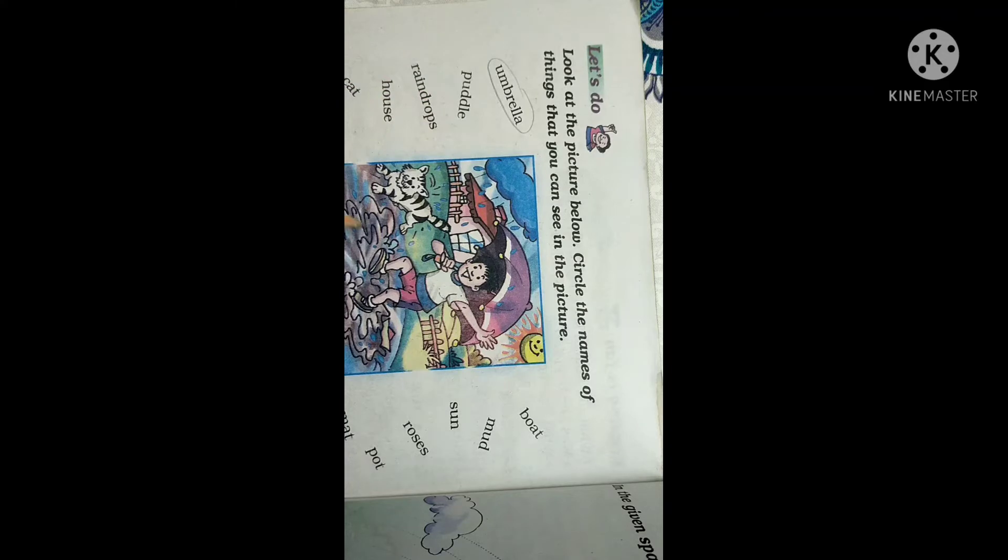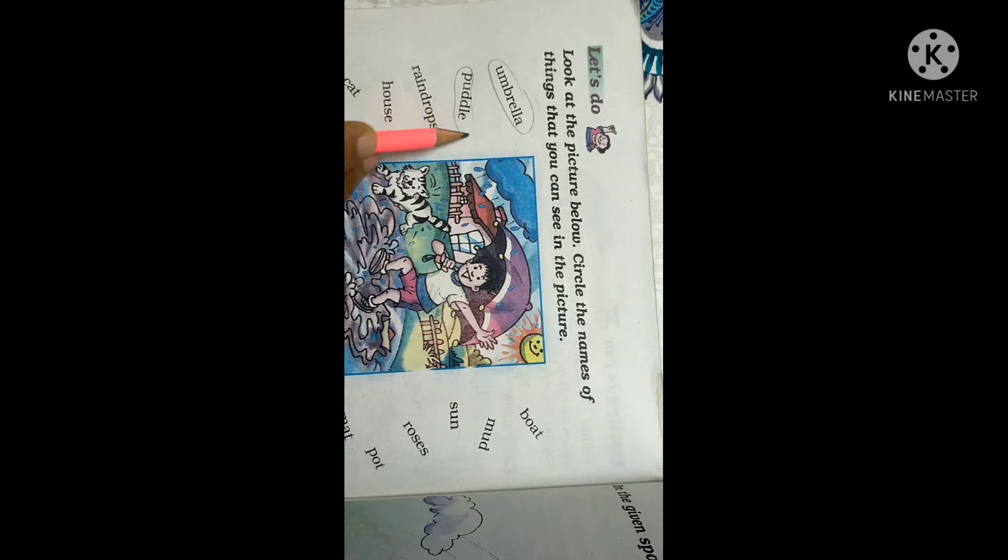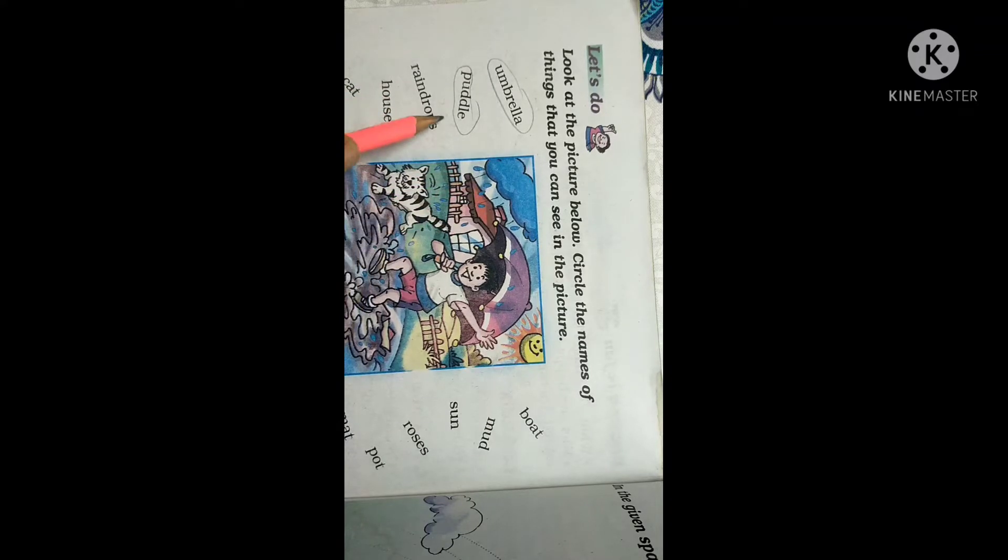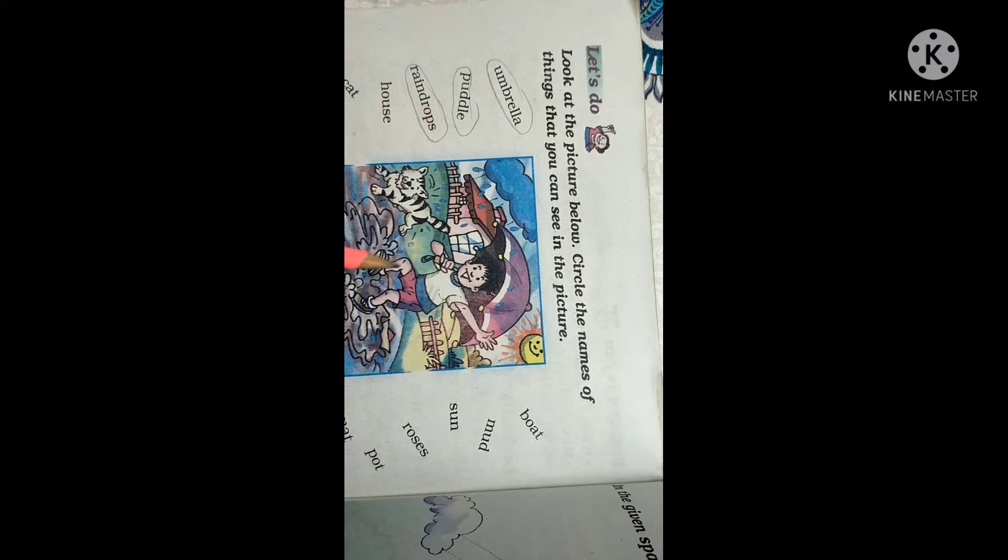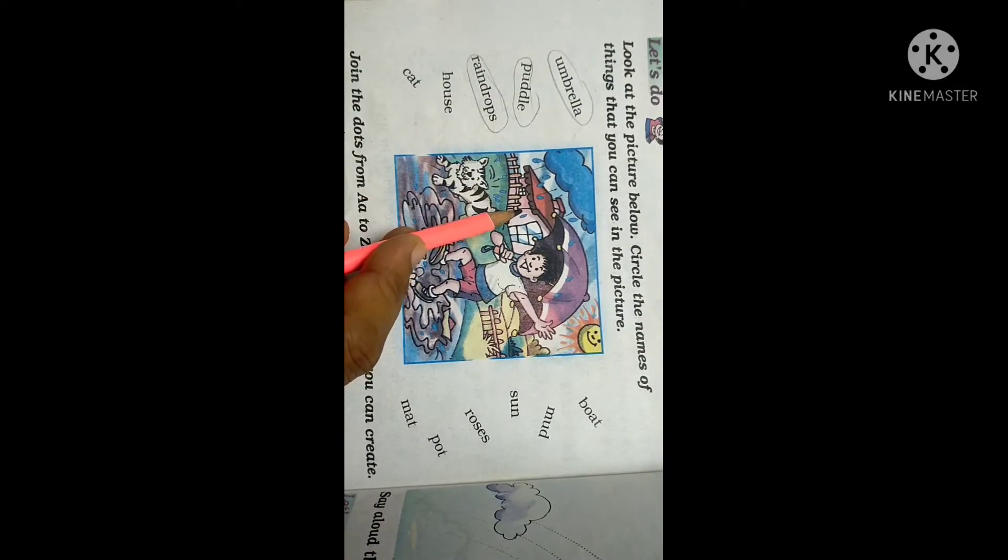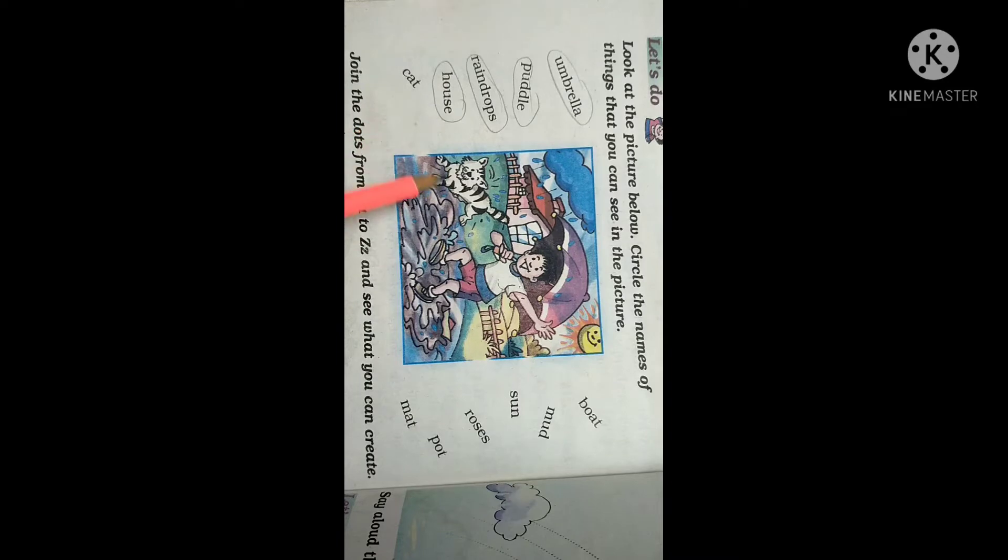Puddles. Yes, puddle is there. So puddle is also there. Raindrops. Yes, raindrops are here. So circle the raindrops. Then house. House is there, back side of the boy.